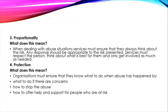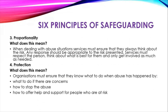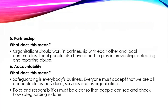The fourth principle is protection: organisations must ensure they know what to do when abuse has happened — knowing what to do if there are any concerns, how to stop the abuse, and how to offer help and support for people who are at risk. The fifth principle is partnership: organisations should work in partnership with each other and local communities. Local people also have a part to play in preventing, detecting and reporting abuse. Everyone is responsible for reporting safeguarding.